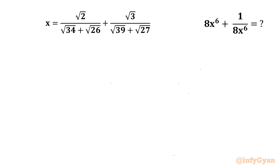Welcome back to Infigyaan, my dear friends. In today's video we are having one very interesting question from Radical Maths. We have to evaluate 8x⁶ + 1 over 8x⁶, given x equals √2 over (√34 + √26) plus √3 over (√39 + √27). Let's call this expression E.